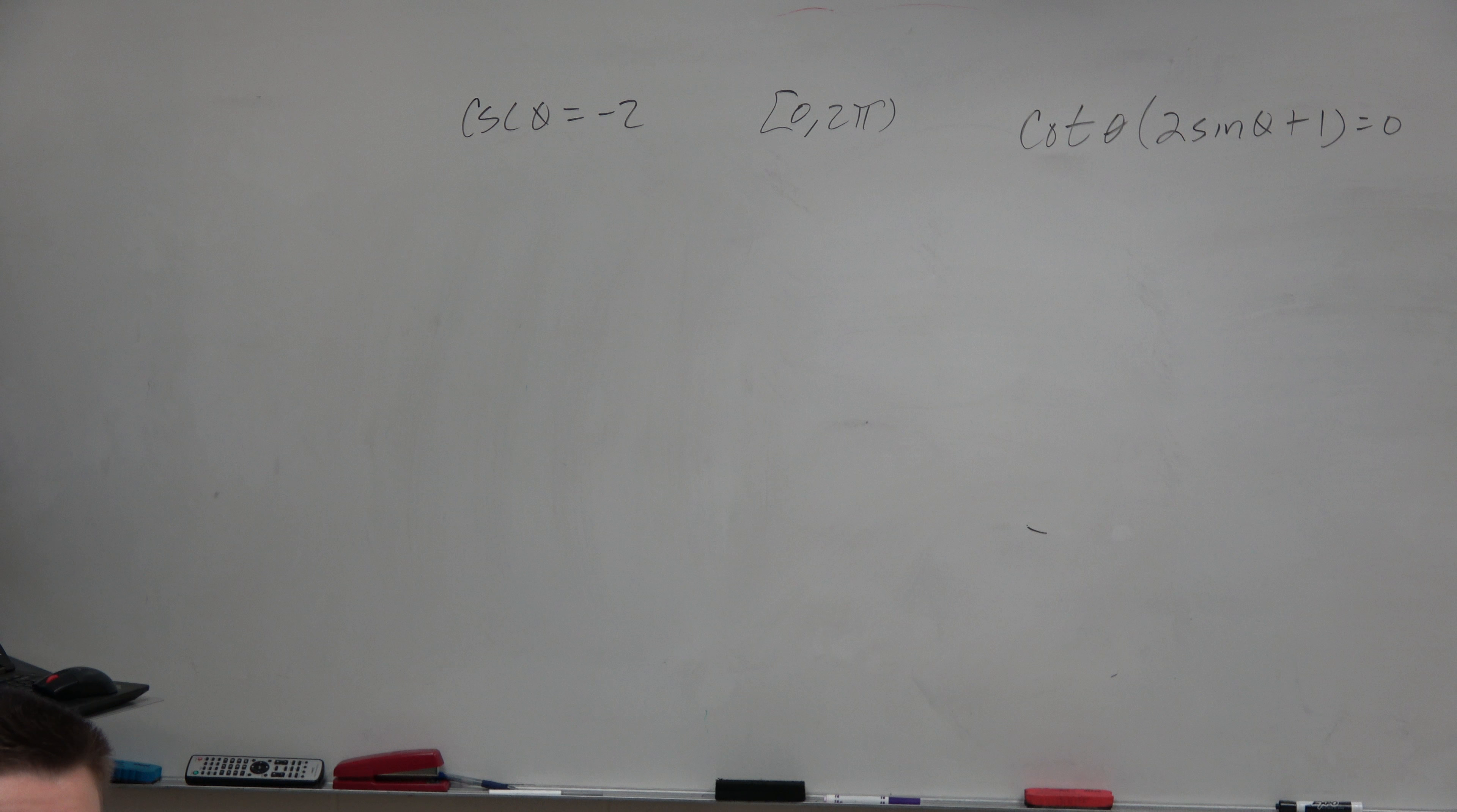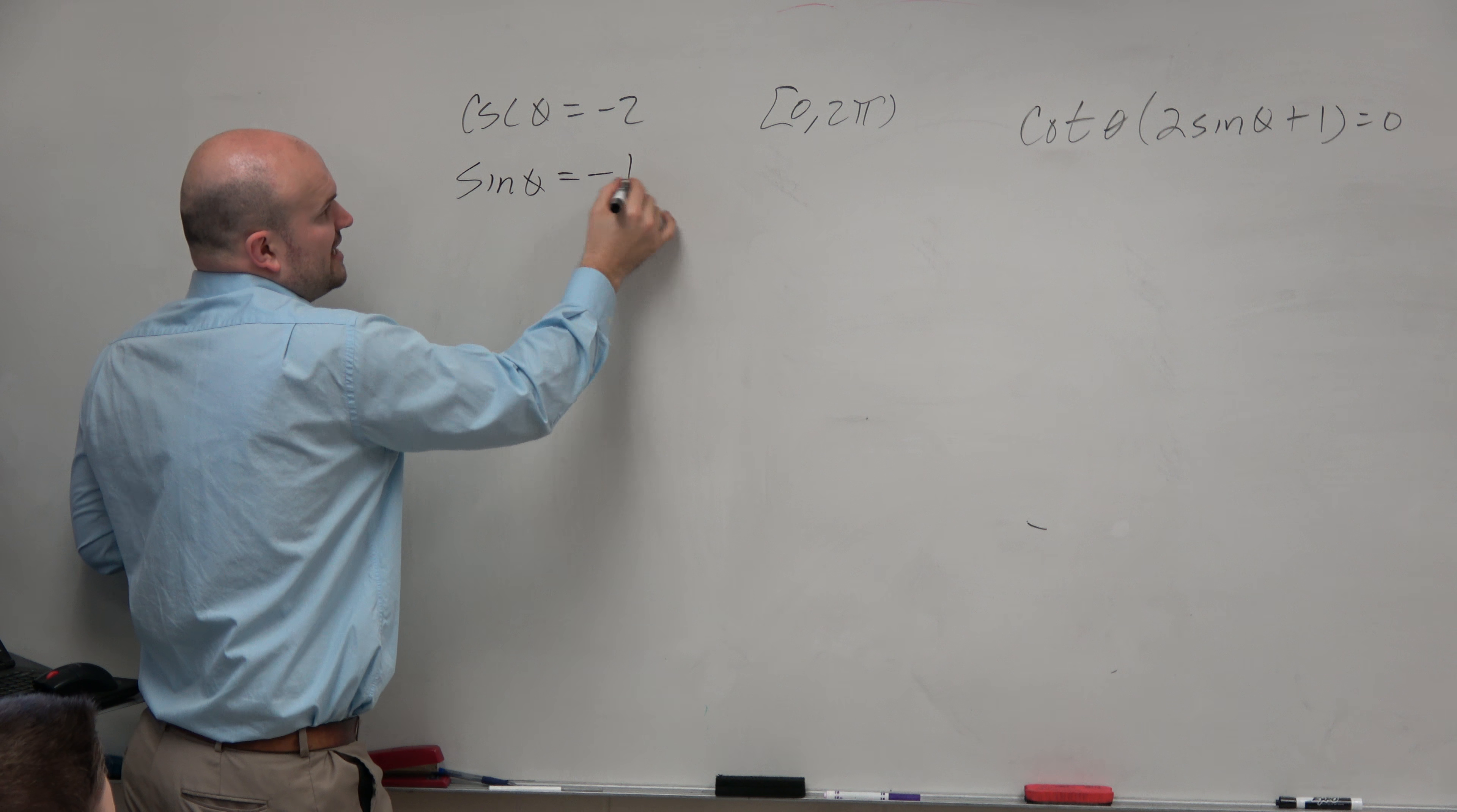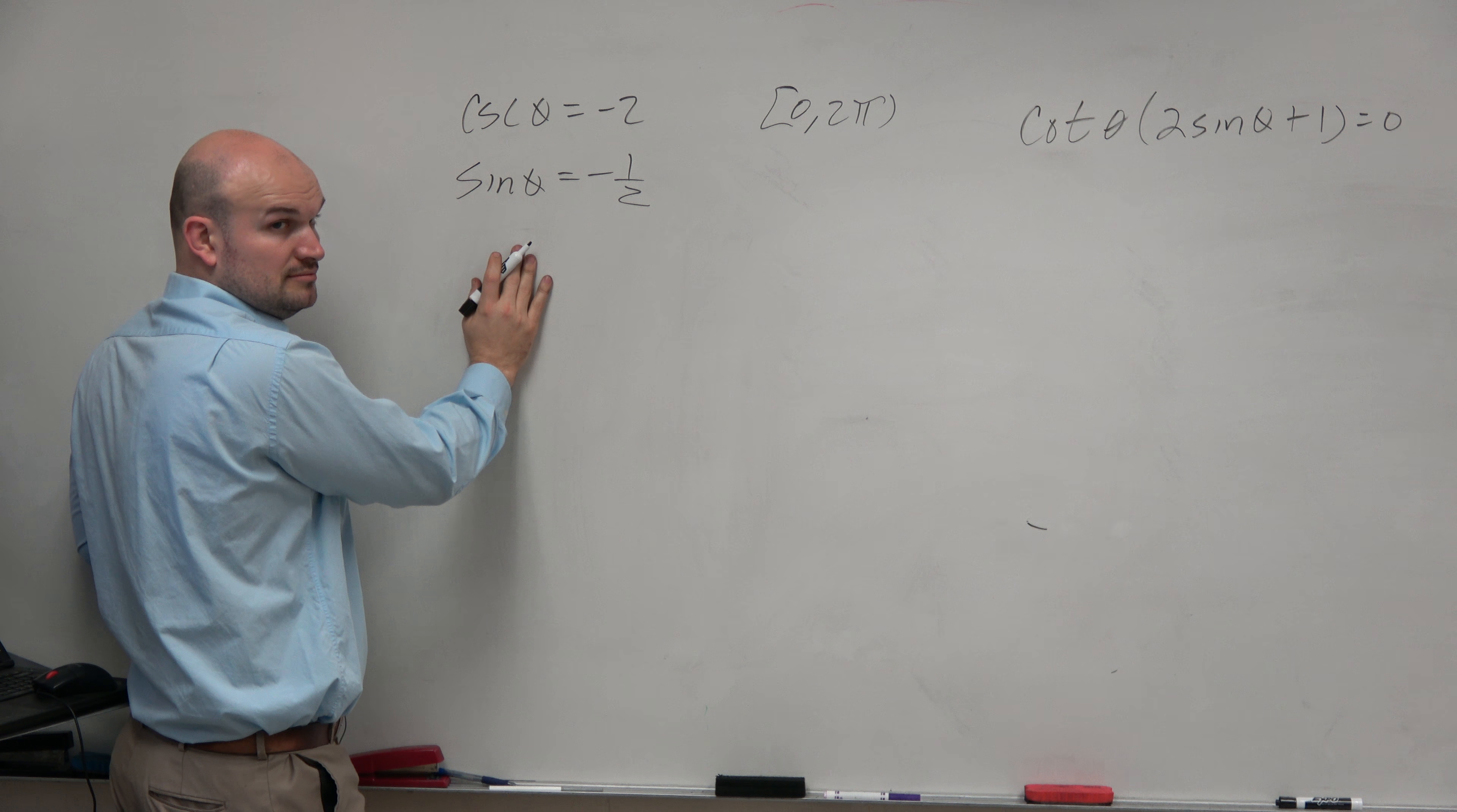I've shown you a couple different ways to write this. You could write this as 1 over sine. The easiest way I would write this would just be sine of theta equals negative 1 half. They're reciprocals of each other, so I can just do that. Do you guys agree with me?